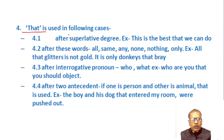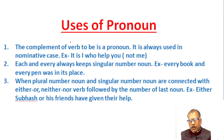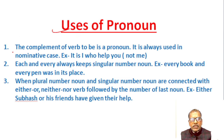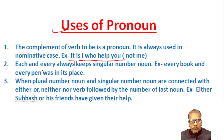Usage rules: The complement of the verb 'to be' is always used in nominative case. Example: 'It is I who help you, not me.' In this sentence, 'I' is nominative case. We cannot use the objective case 'me' here — 'It is I' is correct, but 'It is me' is incorrect.